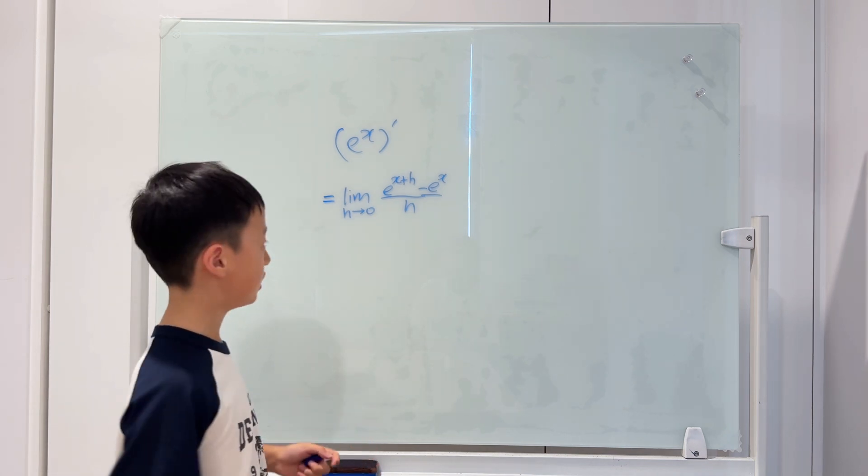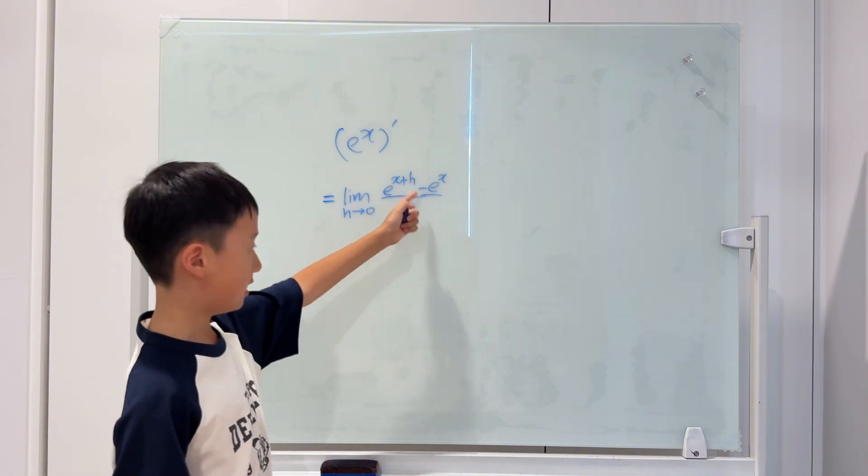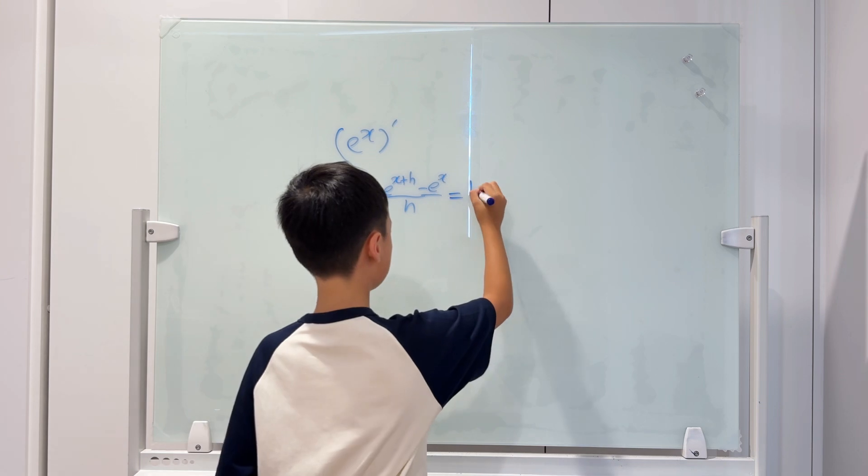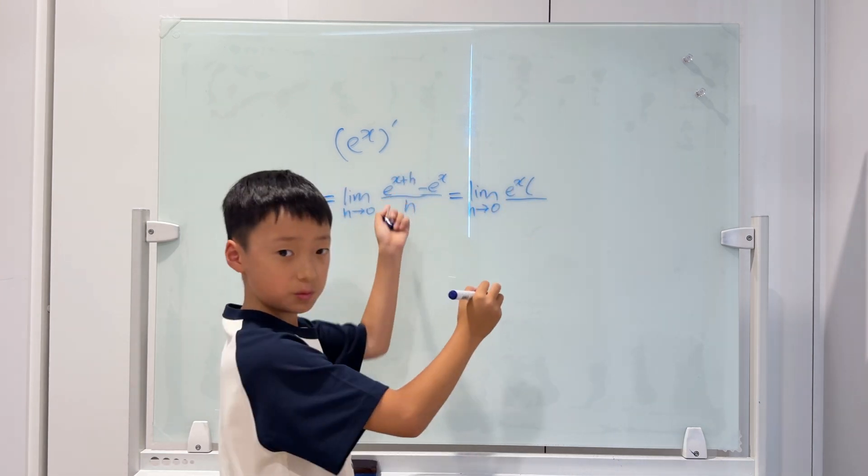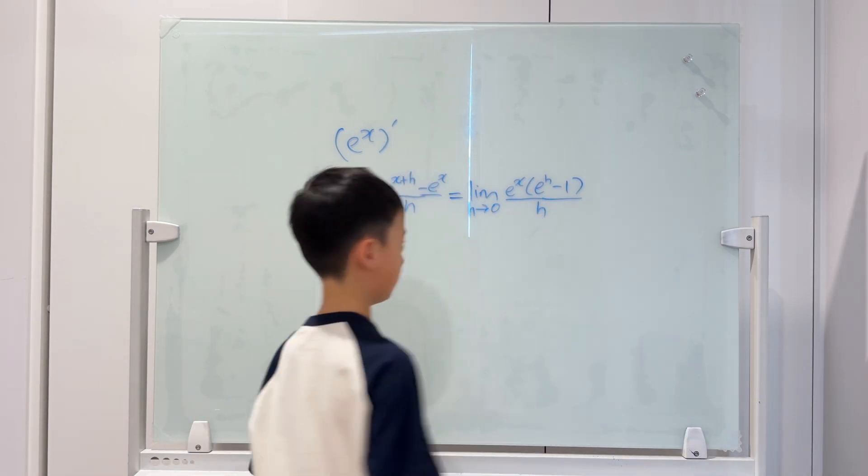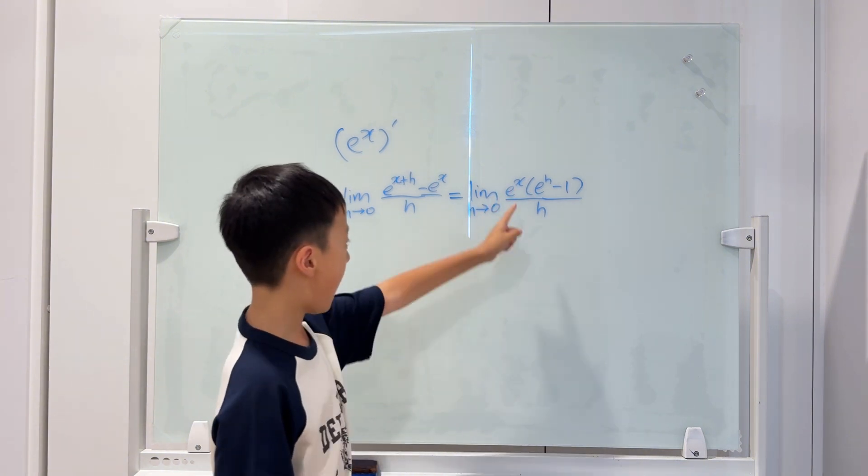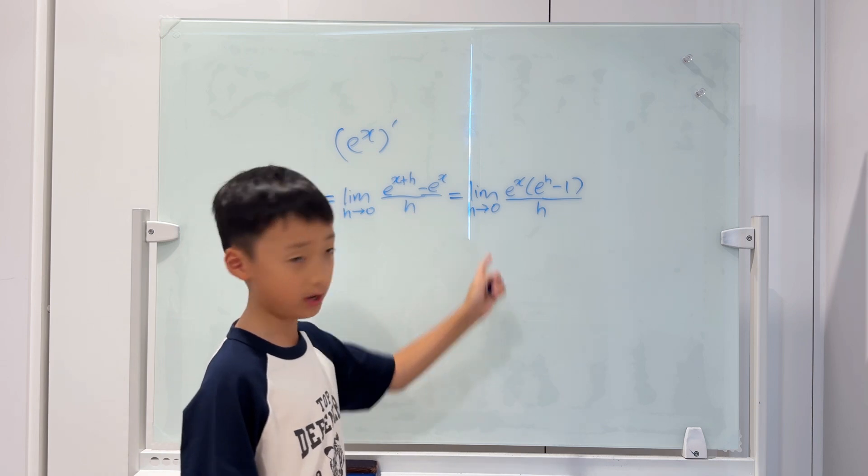We will do some manipulation. As you see on the top, we can factor out an e to the power of x. So this one will just become e to the power of h, and this one will obviously just become 1. Then we keep the denominator safe. We can just take this e to the power of x outside of the limit, because this e to the power of x does not include h.